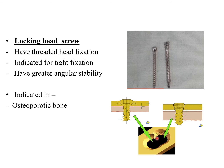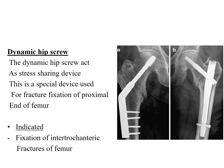The locking head screw can self-lock and maintain compression at the fracture site while putting less tension on the hole. The dynamic hip screw, as seen in the X-ray, is a special device used for fracture fixation of the proximal femur. It is partially threaded with a greater pitch because it is used in the cancellous region.